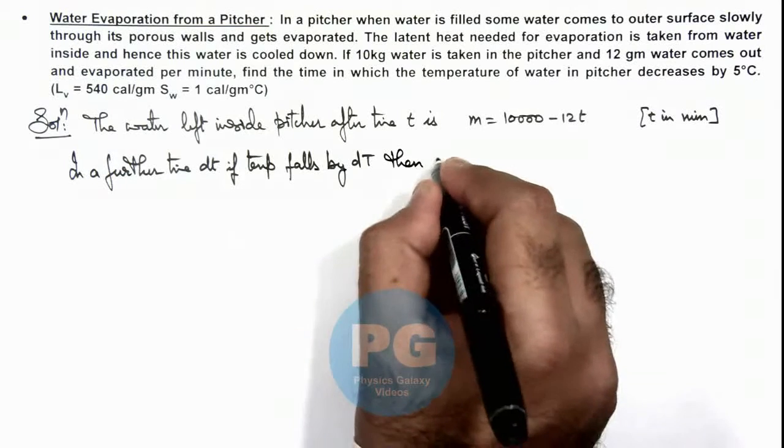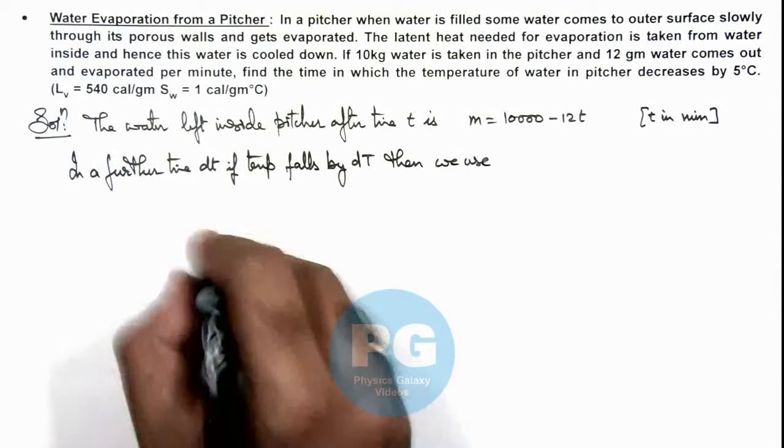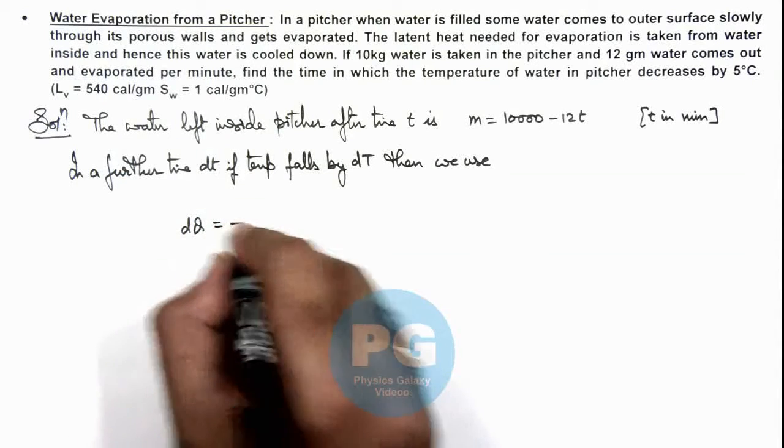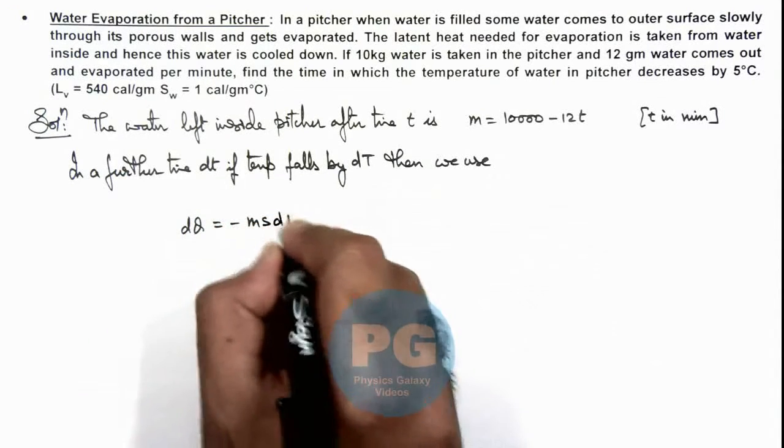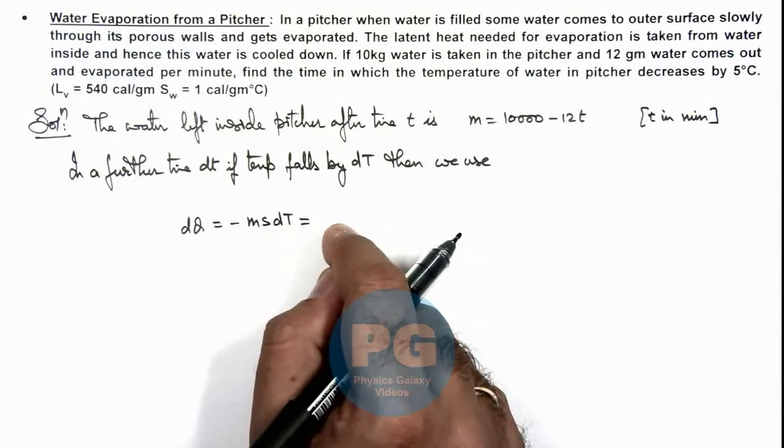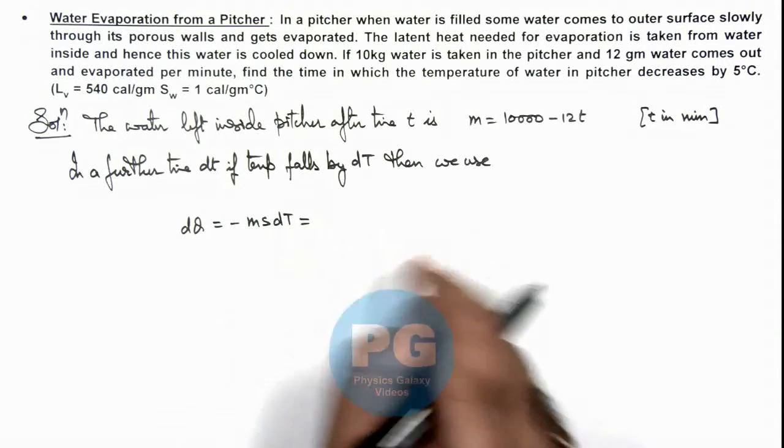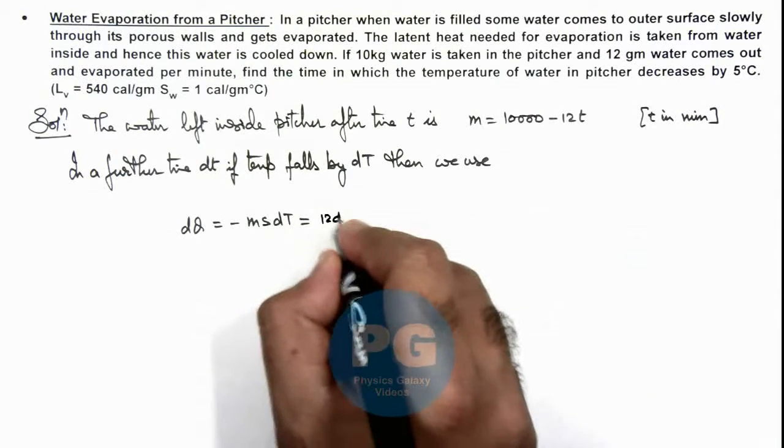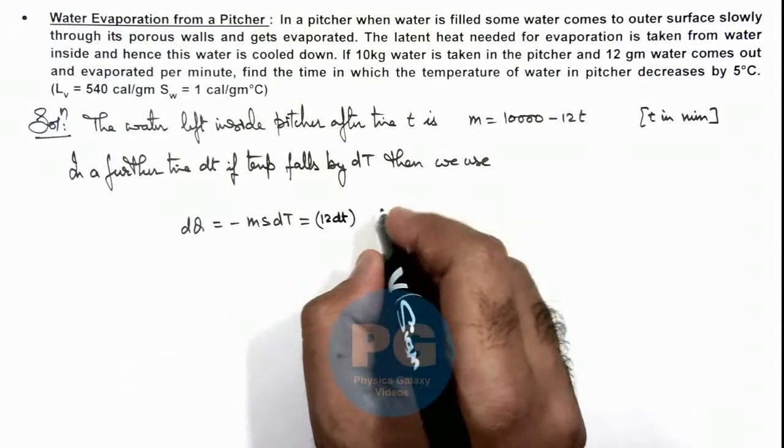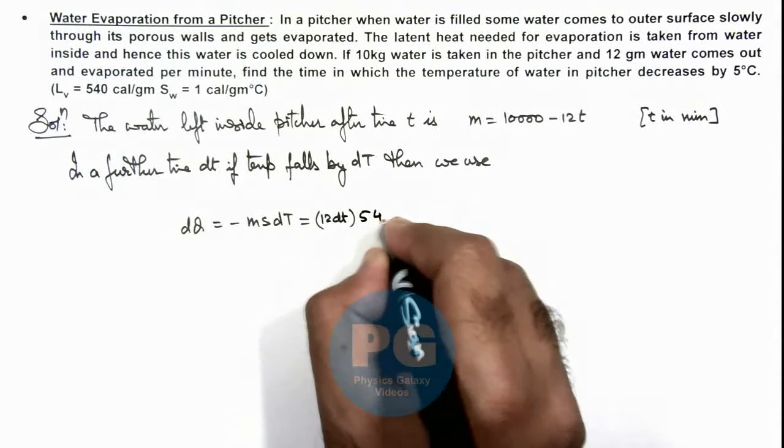The amount of heat released by inside water can be written as minus m·s·dT should be equals to the amount of heat which is absorbed by the water in time dt, which is 12dt multiplied by the latent heat of evaporation which is 540 calories.